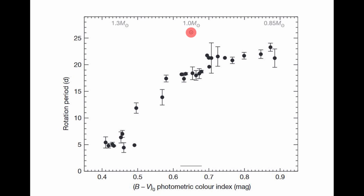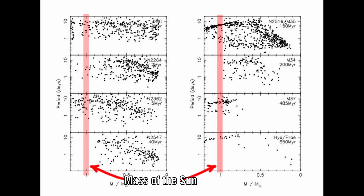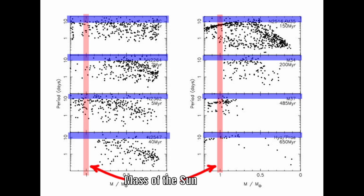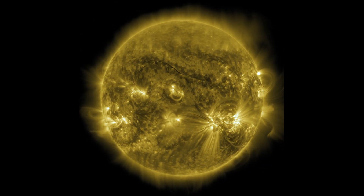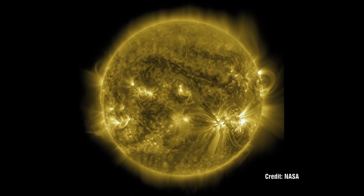Looking at younger stars, we also see that their rotation rates vary considerably, and indeed most have a faster rotation rate than the 9 to 10 days estimated for our young Sun. Understanding why some stars start with a slower rotation rate compared to others is still a mystery.